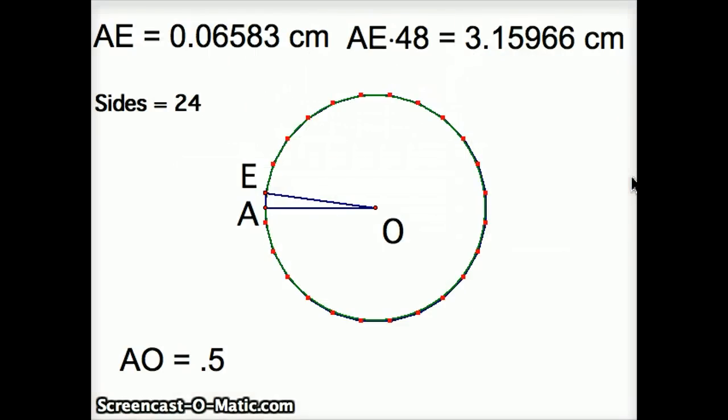Now that he knows the length of AE, he can move this up to a 48-gon. Like this. The half of one side of the 48-gon is what I'm going to call AF. And he's going to calculate this out, again, using the angle bisector theorem.